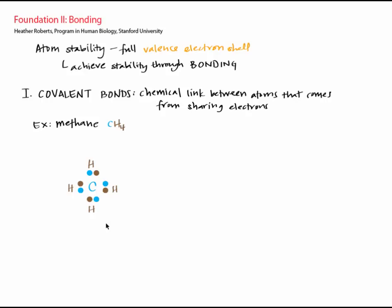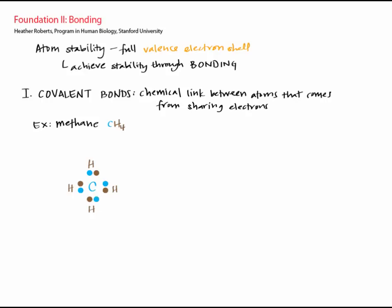Covalent bonds are strong because the shared electrons tie the atoms together. When each atom contributes one of its own electrons so that two total electrons are shared between the atoms, that's a single covalent bond. The bonds between carbon and each hydrogen atom in methane are single covalent bonds.